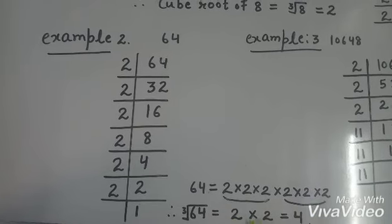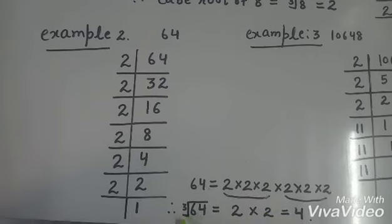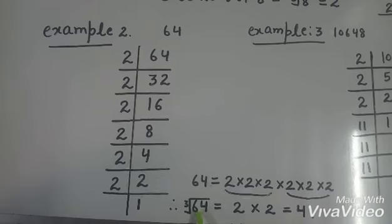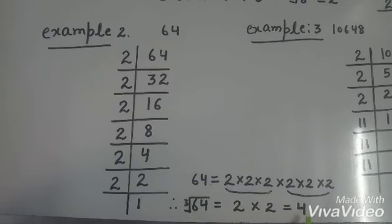Therefore 2 × 2 is 4. So cube root of 64 is 4.